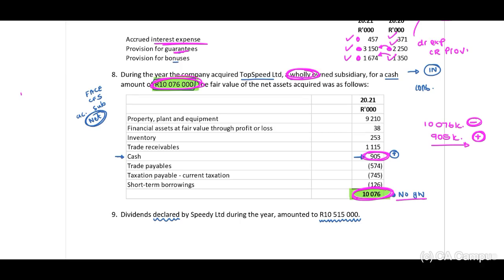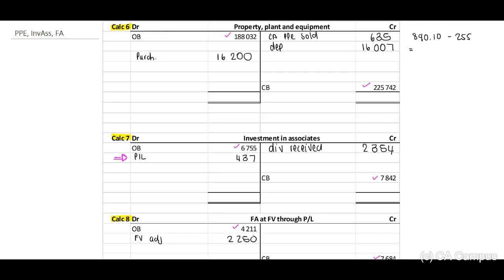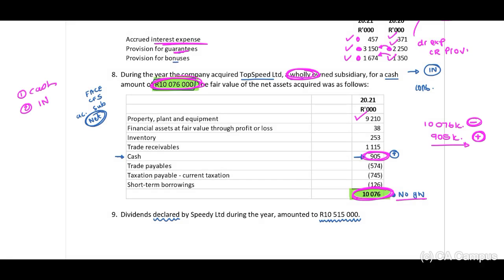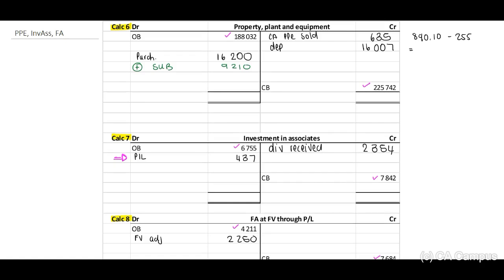Next, we indicate only the cash outflow and include our property, plant and equipment line item. We are reconciling 9,210, which increases on the debit side — plus the subsidiary: 9,210. Then referring back, we have the financial asset at fair value: 38,000. In the calculation at the bottom, plus our subsidiary: 38.